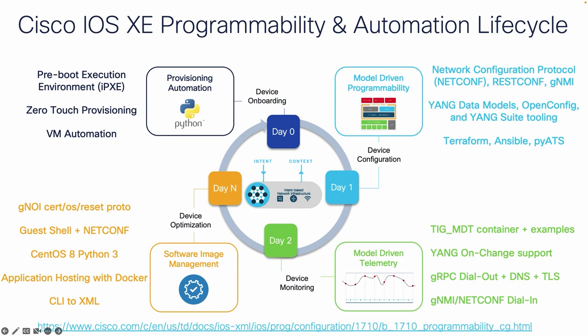To start off, here is the programmability and automation lifecycle. We talk about this in terms of four main days, and we have programmability and automation features at every day in this lifecycle. The first one is onboarding, when you first get a device and plug it into your network. Next, we have device configuration — that's where most of us sit for a lot of the time. We're trying to configure one device, or maybe we have a golden config that we'd like to apply to hundreds or thousands of other devices and make that process more efficient.